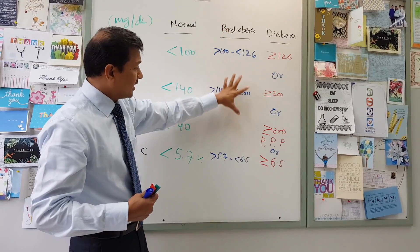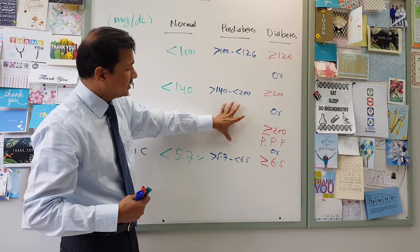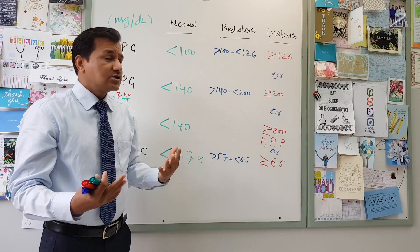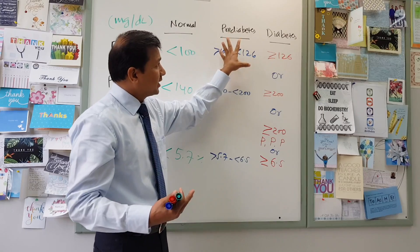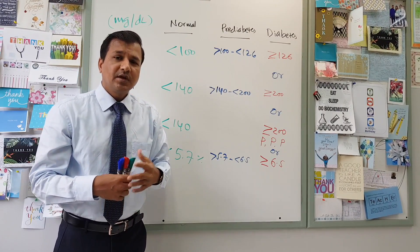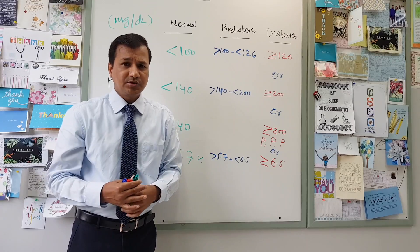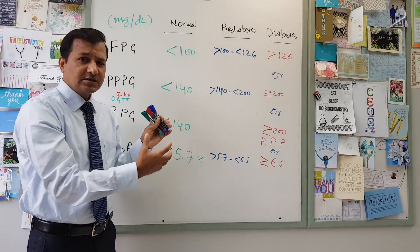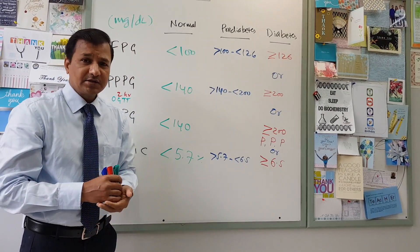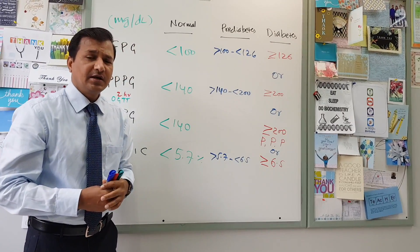Most importantly, recognizing pre-diabetes is critical. If a pre-diabetic person is identified, lifestyle therapy and lifestyle modification are the most important interventions to prevent pre-diabetes from progressing into diabetes. That's all about the ADA criteria for diagnosis of pre-diabetes and diabetes. I hope this video has helped you revise these numbers and understand the normal ranges. Thanks for watching and see you in the next video.